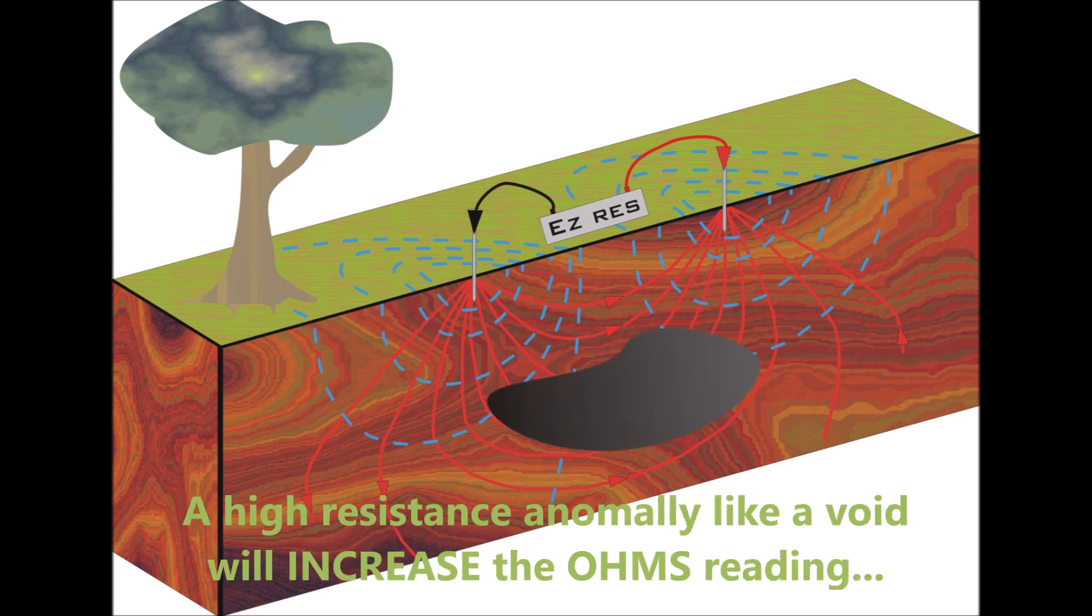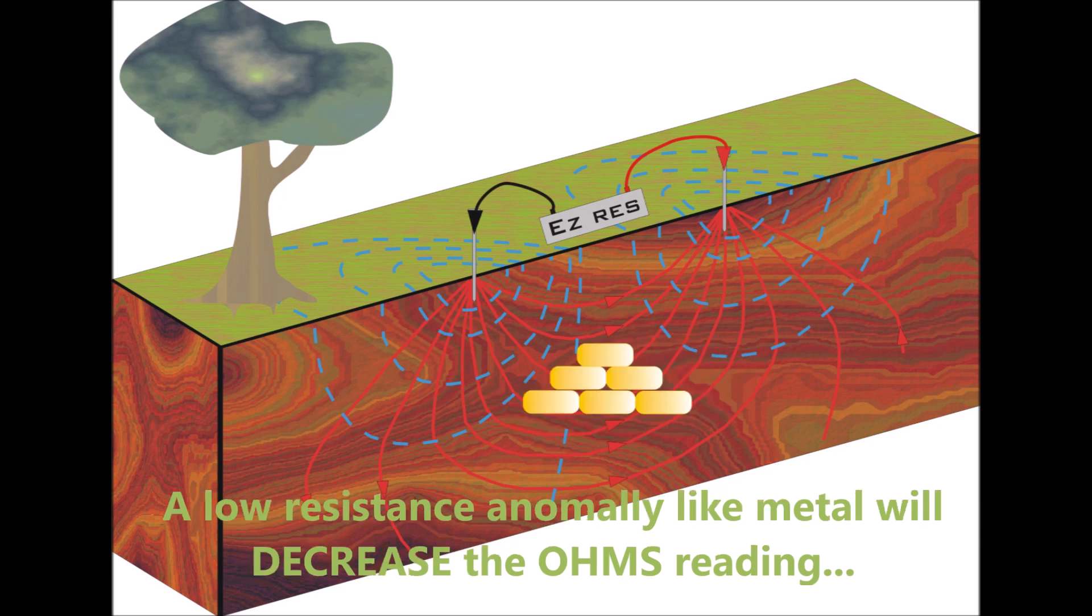A high resistance anomaly like a void will increase the ohms reading. A low resistance anomaly like metal will decrease the ohms reading.